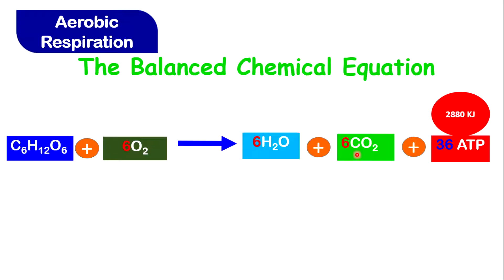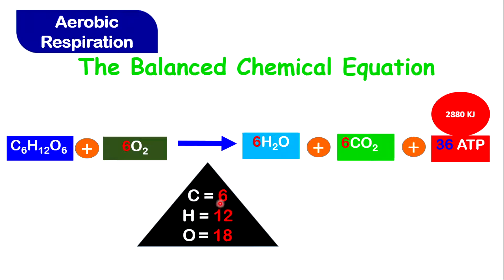These numbers are here because on either side of the equation — the reactant side and the product side — the atoms must be the same. Matter cannot be created or destroyed; we can only convert it from one form to another. So to conserve the atoms, you have 6 carbon, a total of 12 hydrogens, and a total of 18 oxygen on either side. These numbers balance the equation.